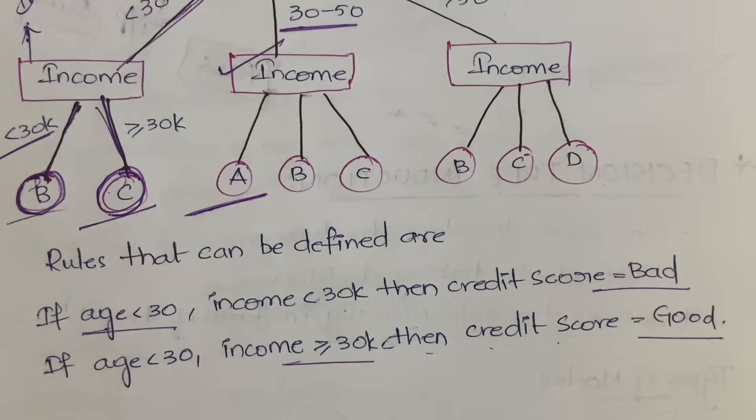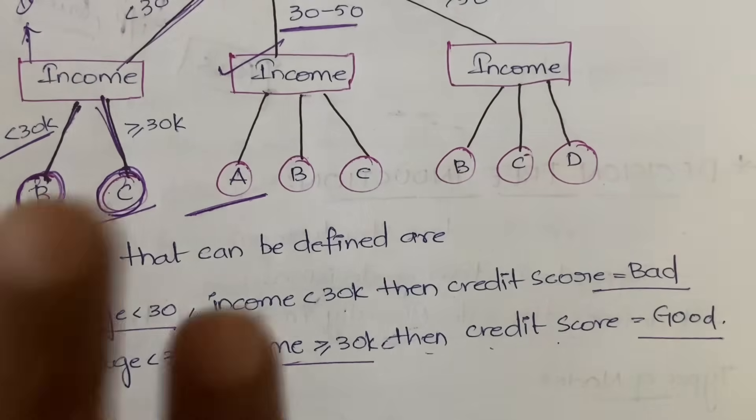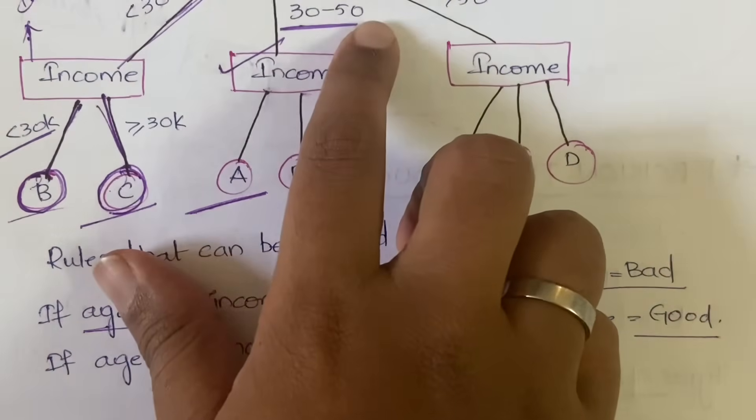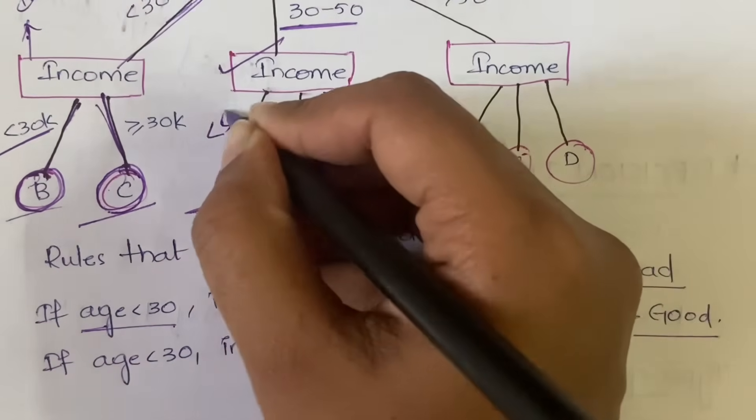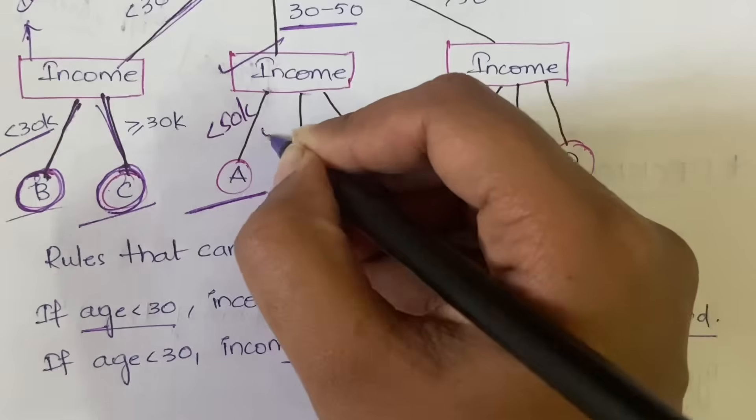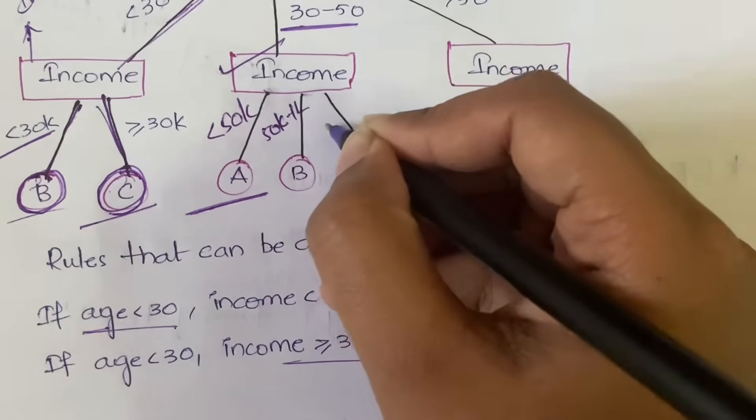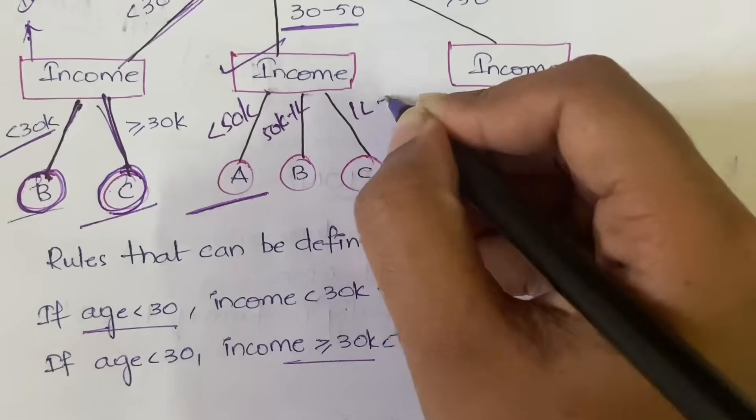By looking at this tree, if some person comes to you, first you will ask the age of the person. If the person says my age is 35, then you will see okay 35 means it will come in this category and you will ask for the income. If the person says my income is 50,000 per month, it may be less than 50k, it may be between 15k to 1 lakh, here it may be from 1 lakh to 2 lakhs like that.